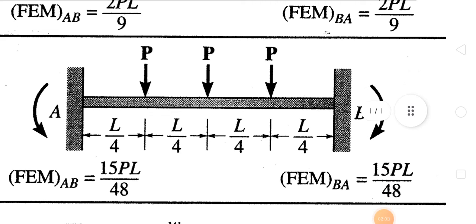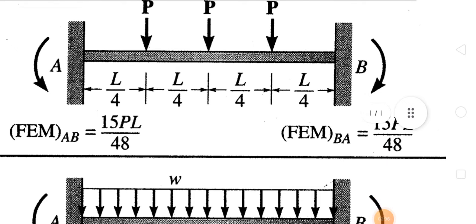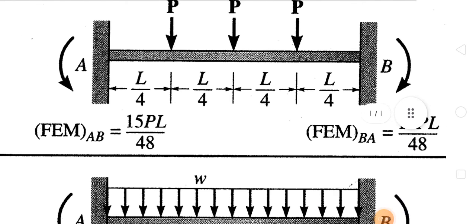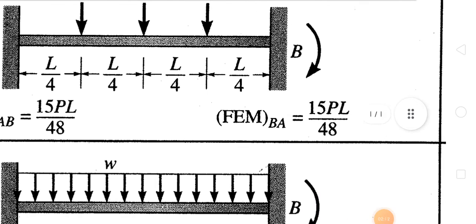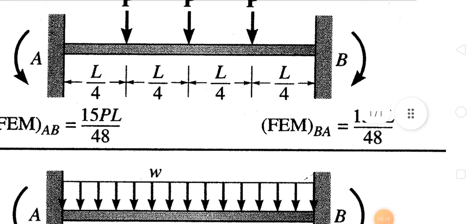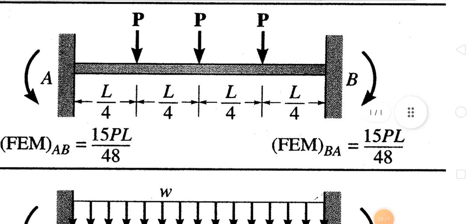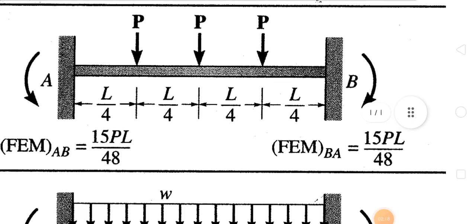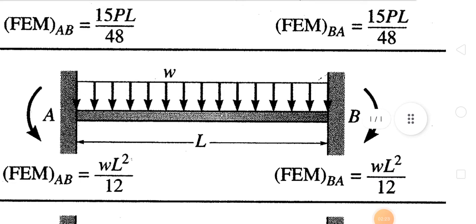Now when there are three loads acting at equal distances from the supports — at L/4, L/4, L/4, and L/4 — the fixed end moments will be 15PL/48 at the A side and 15PL/48 on the right side. Both are the same when three point loads act at L/4 distance from one another.